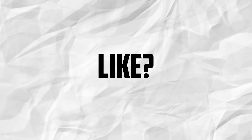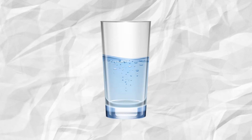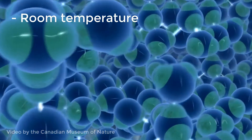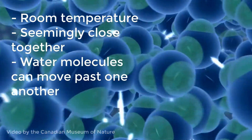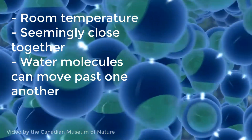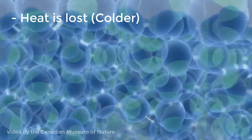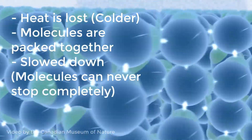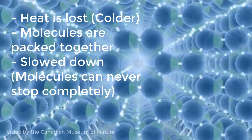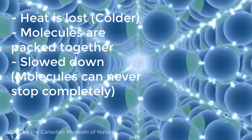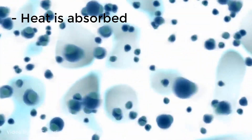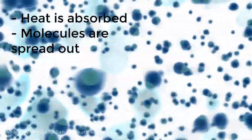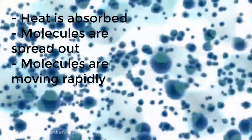What does heat transfer look like? Let's take a glass of water for an example and take this down to a molecular scale. Right now the water is at room temperature and the water molecules seem to be close together, but they can move past one another — the water is in its liquid state. When heat is lost, the molecules begin to pack together and slow down until it looks like they're not moving, even though they still are, just really slowly. This is water's solid state. When heat is absorbed, the molecules begin to spread out more and move more rapidly. This is water's gas state.